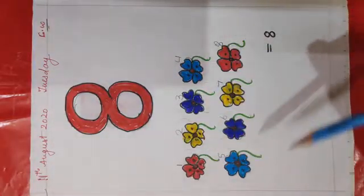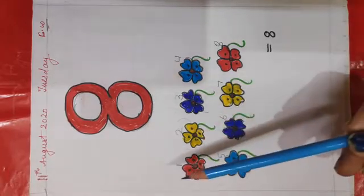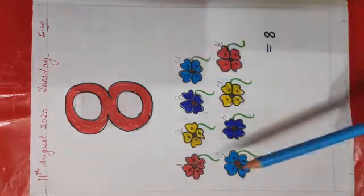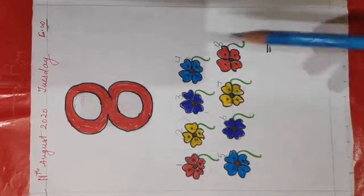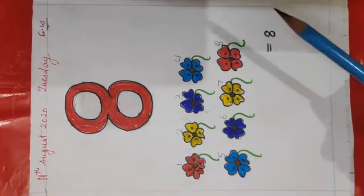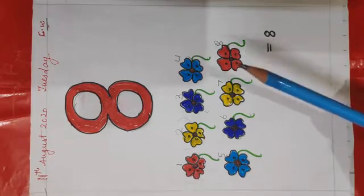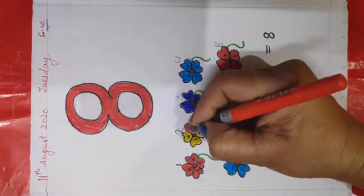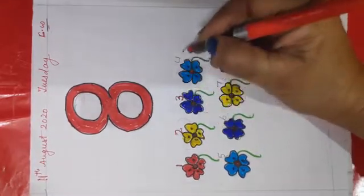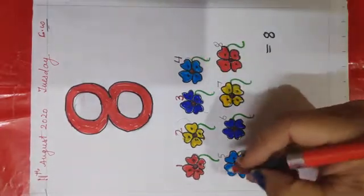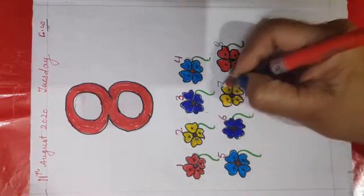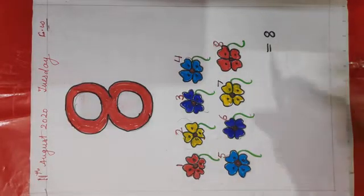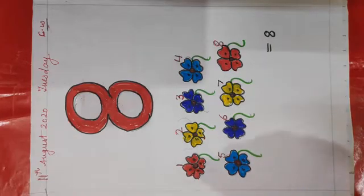Now what to do? We will count how many flowers are there. This is 1, 2, 3, 4, 5, 6, 7, 8. How many flowers are there? 8. See, 1, 2, 3, 4, 5, 6, 7, 8. There are 8 flowers.